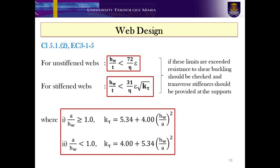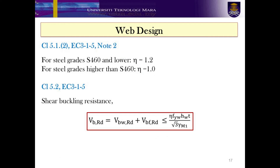Clause 5.1 Number 2 in EC3 Part 1-5 provides a guideline to check the susceptibility of the proposed girder towards shear buckling and the requirement to provide transverse stiffness. You are required to highlight these clauses in your design code. Clause 5.1 Number 2 in EC3 Part 1-5, Note 2, provides the suggested value of the parameter given by the symbol nu.